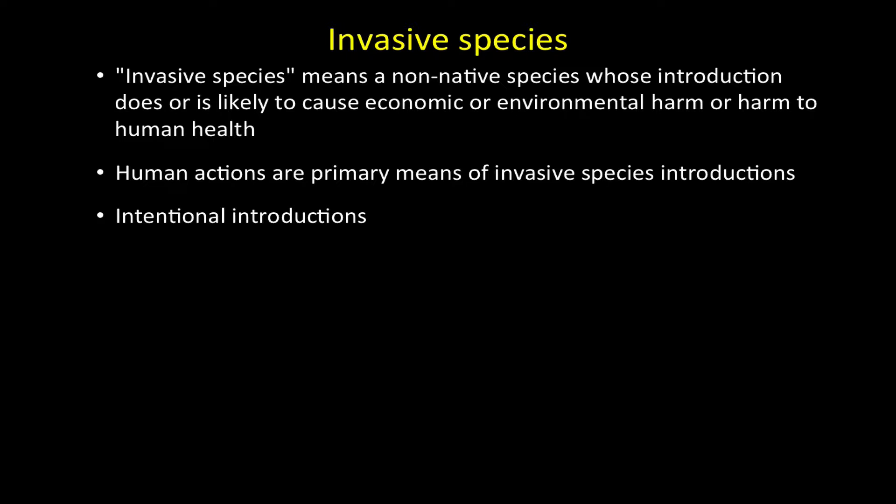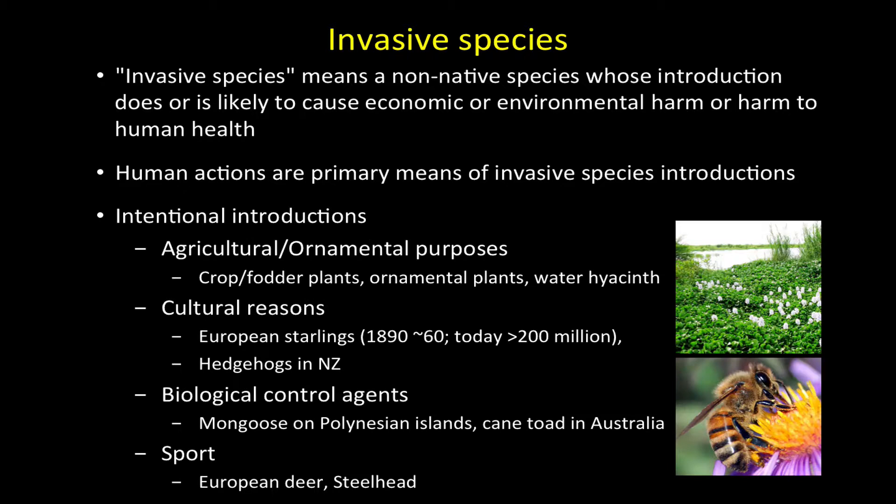One example of an intentional introduction is Arundo. The reason for its introduction into the U.S. was for paper production and/or reeds for musical instruments — a product with utility. An intentional introduction might be for ornamental or agricultural purposes, and a lot of the plants we grow in our gardens can be potential invasive species. For example, water hyacinth is an ornamental water plant, but if it gets out into waterways it can be very destructive and clog those waterways.